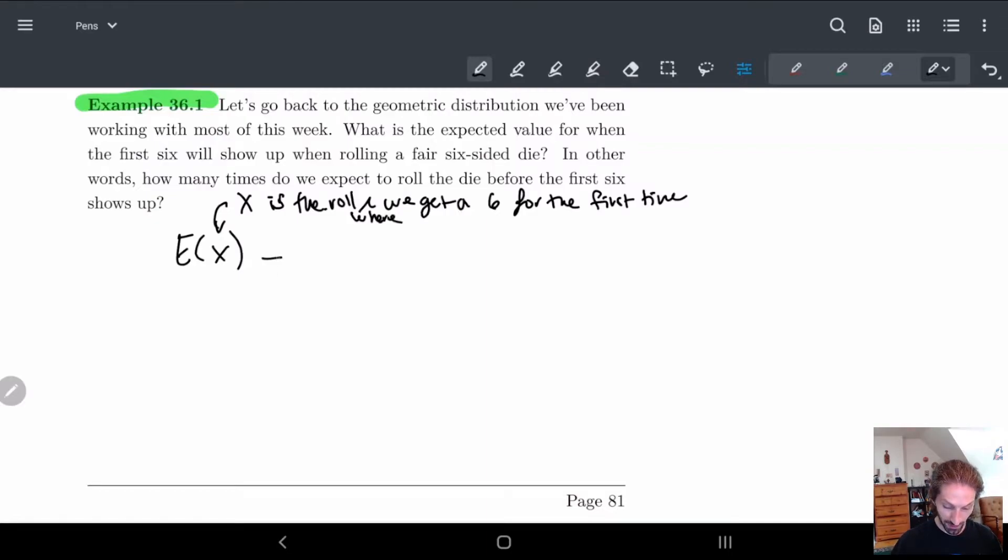Okay so expected value, we have a formula right, so this is X times P of X, and we need to do this over all X right, so X goes from 1 all the way up to infinity. Technically we can do 0 as well here but when X is 0 this just becomes 0 and we don't have to care as much.